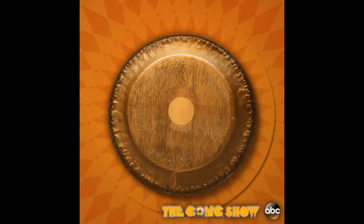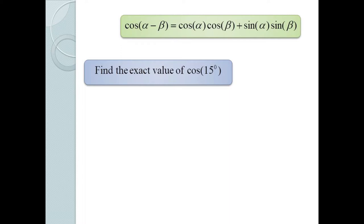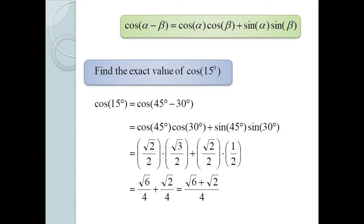Let's consider a simple example using this formula. Here we want to find the exact value of cosine 15 degrees. Fifteen degrees is not one of our special angles. However, we can express 15 as 45 minus 30, the difference of two special angles. Using our difference formula: cos 15 = cos(45 − 30) = cos 45 · cos 30 + sin 45 · sin 30 = (√2/2)(√3/2) + (√2/2)(1/2) = (√6 + √2)/4.